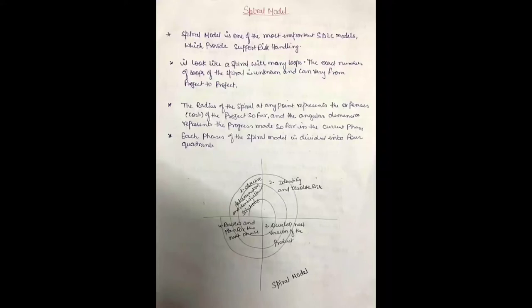Hello everyone. In the previous video I discussed the waterfall model. In this video I will discuss the spiral model — its advantages and disadvantages. The spiral model is one of the most important SDLC models, which provides support for risk handling. Basically, the spiral model is about handling risk, and it looks like a spiral with many loops.